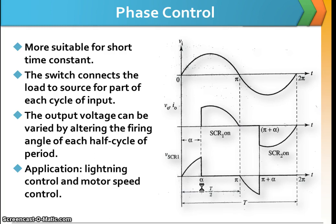The output voltage can be varied by altering the firing angle of each cycle of period. The application can be seen in lighting control and motor speed.